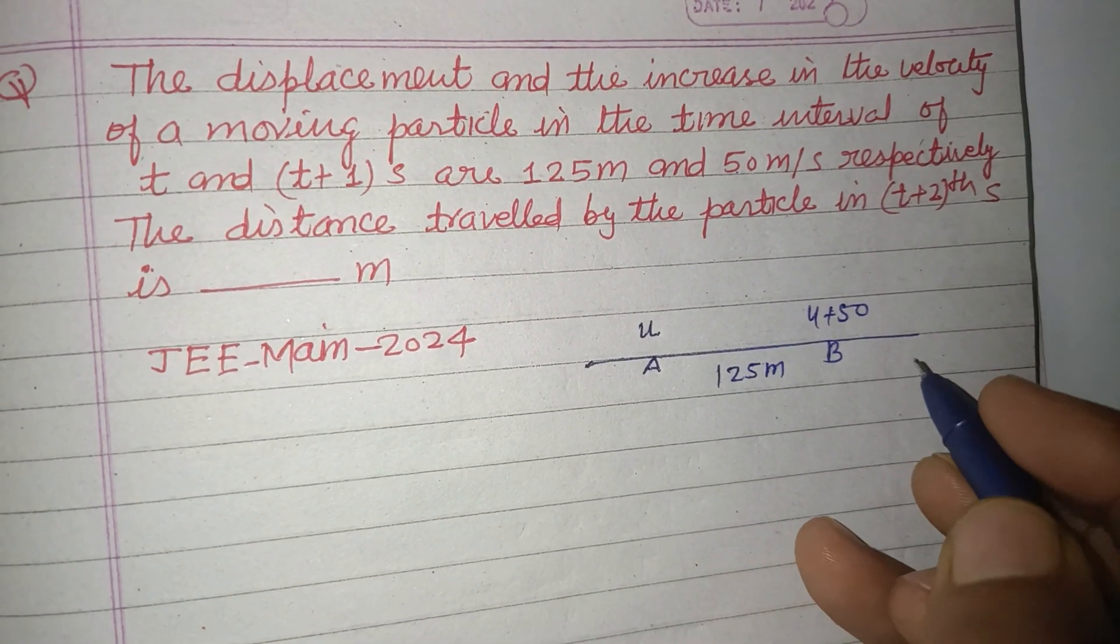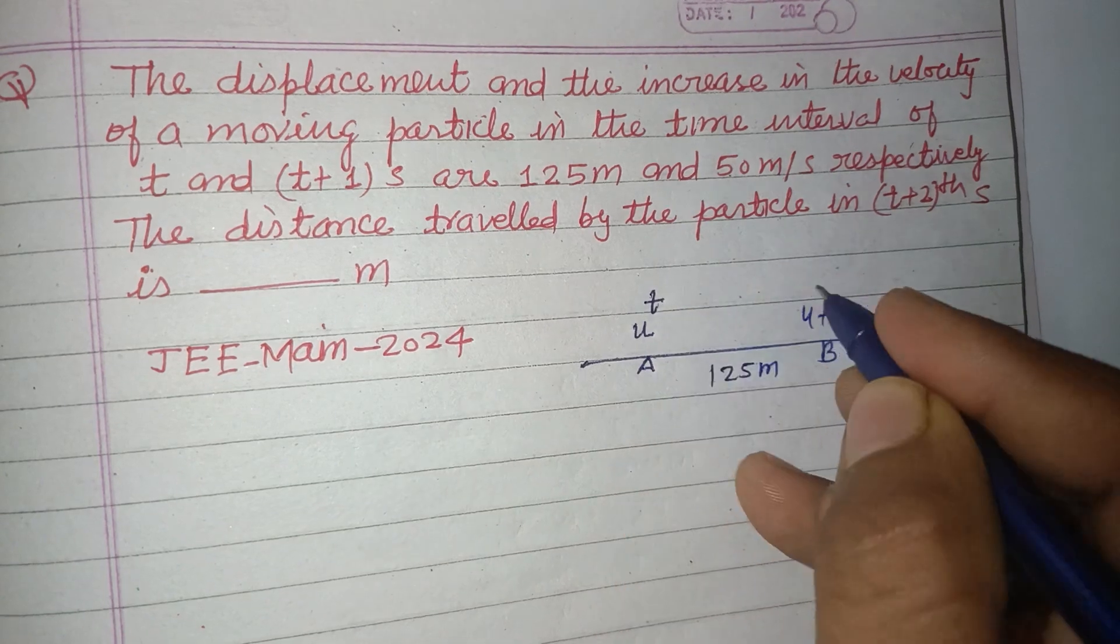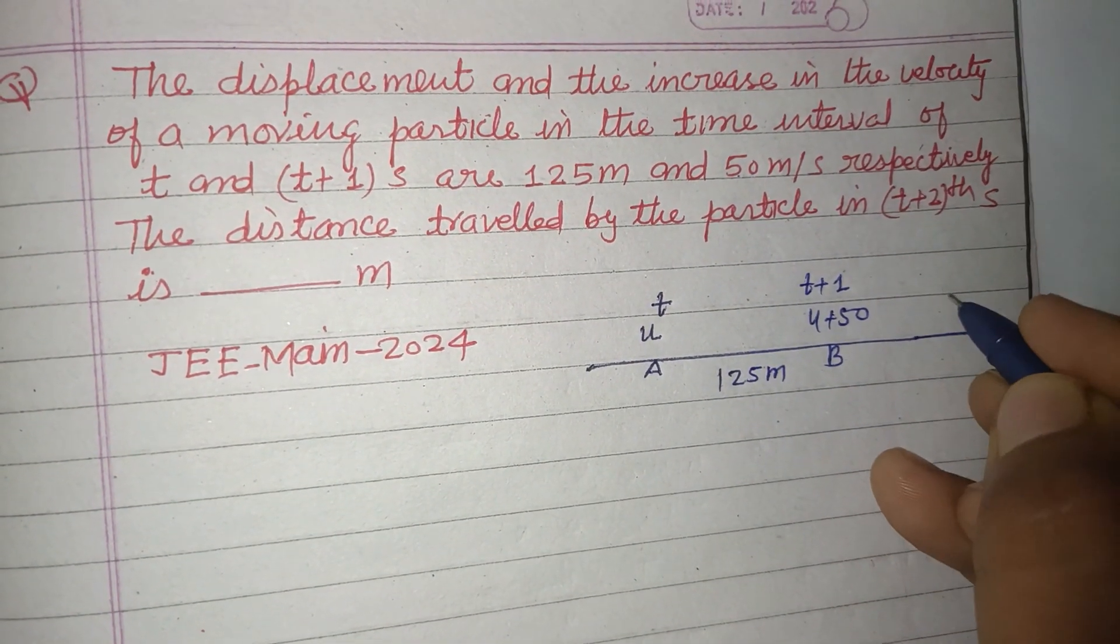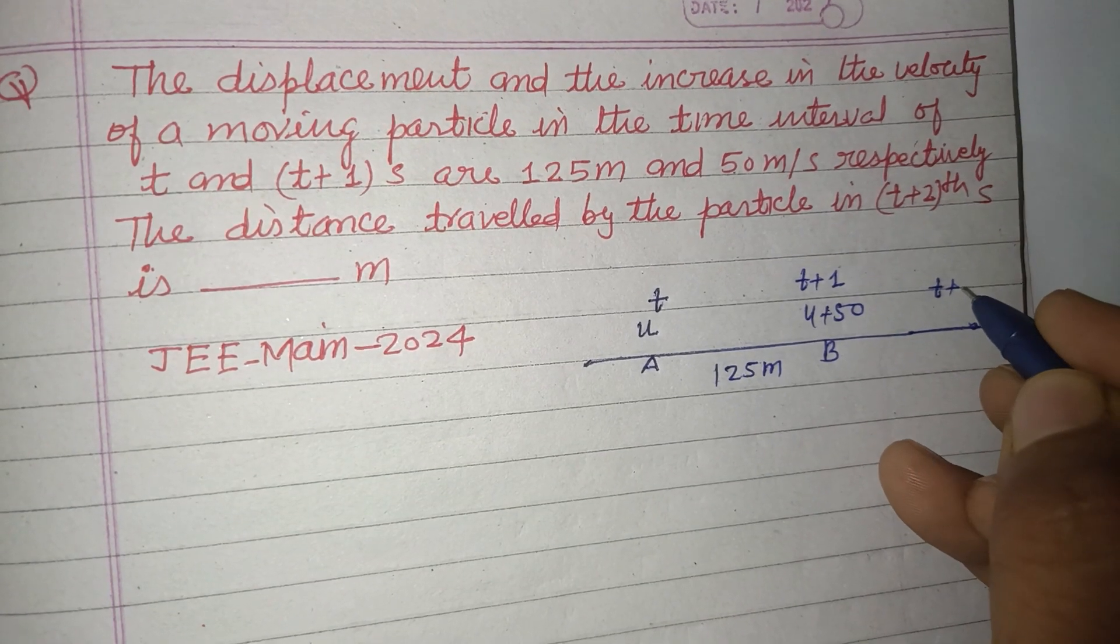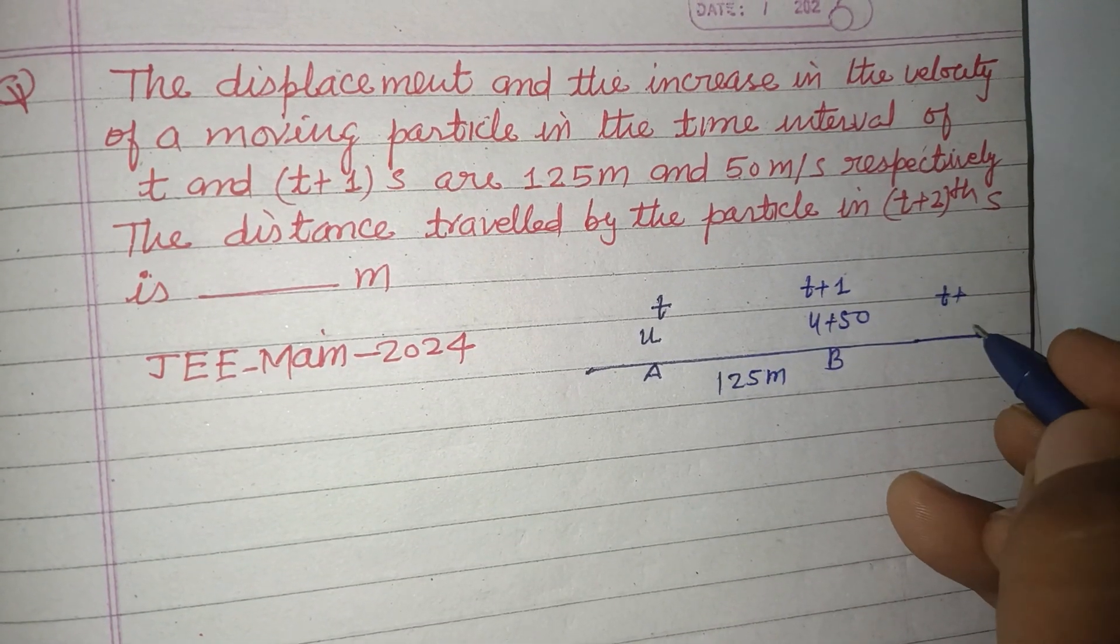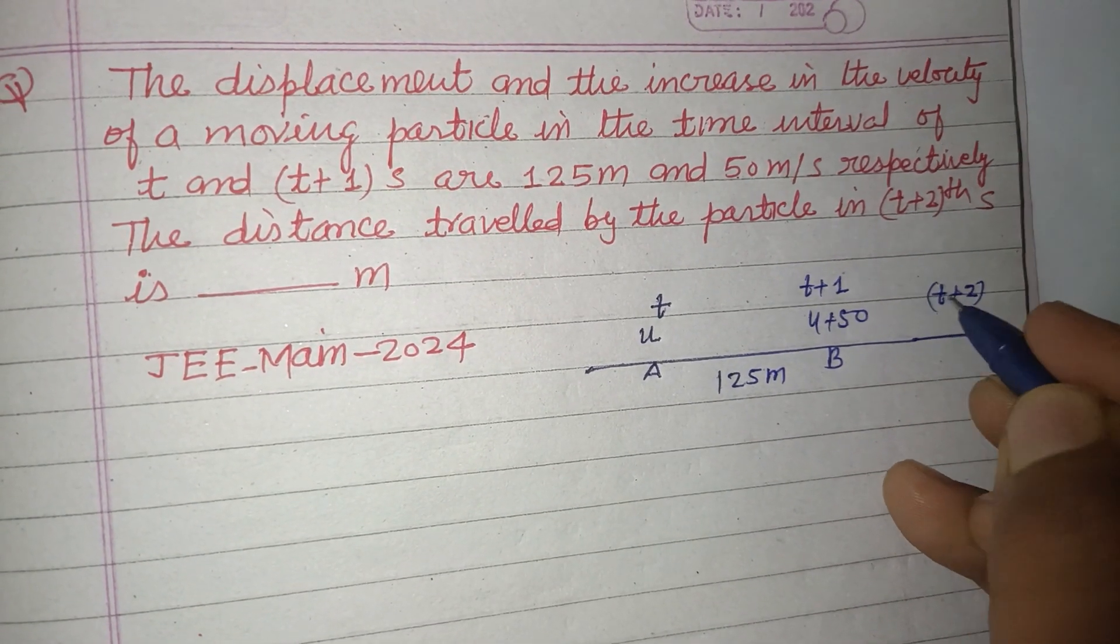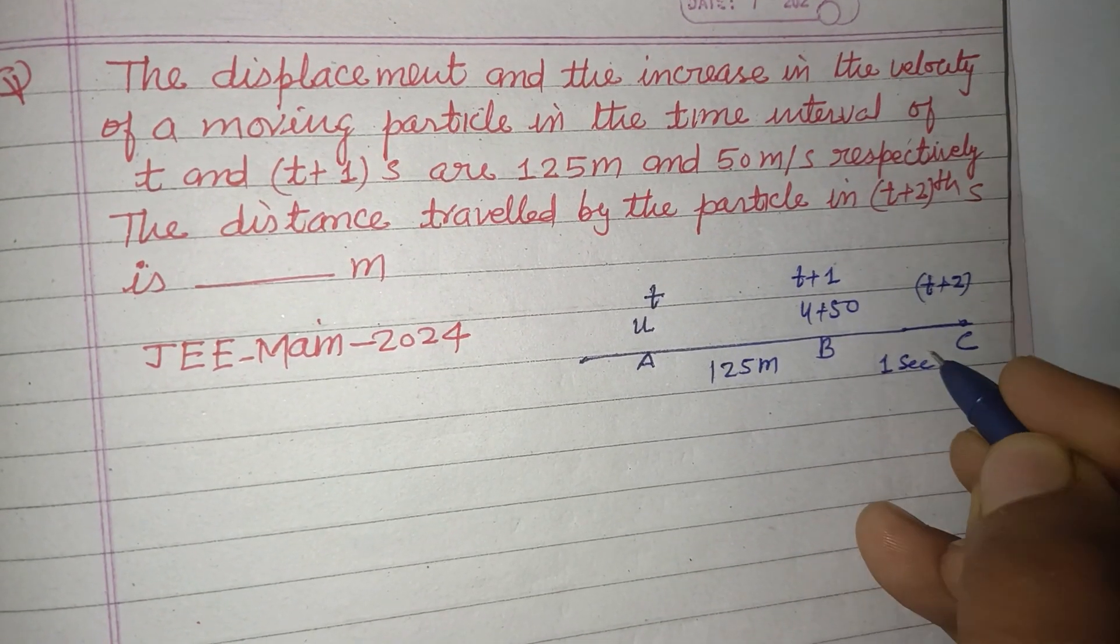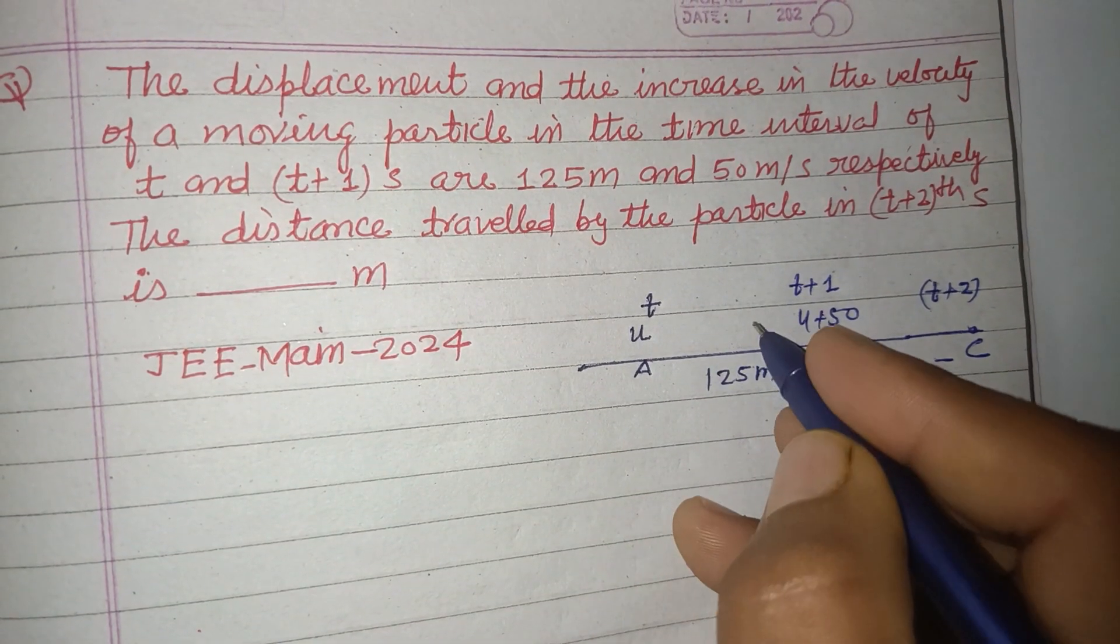Here time is t and here time is t plus 1. The question is asking to find the distance traveled in t plus 2 second, which means only 1 second interval distance is asked, and here is also 1 second.